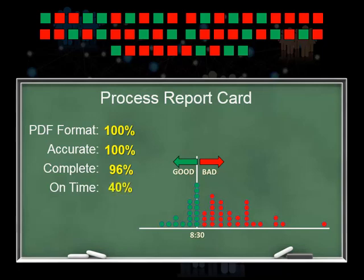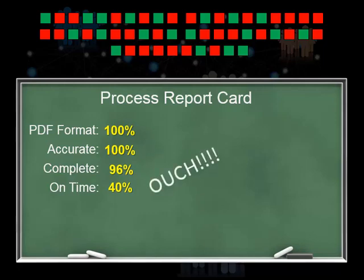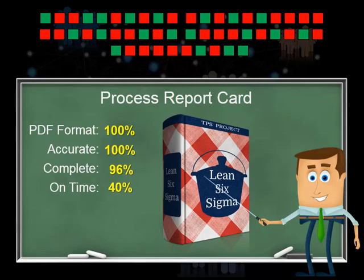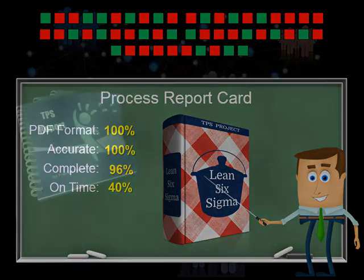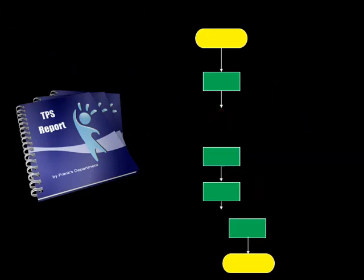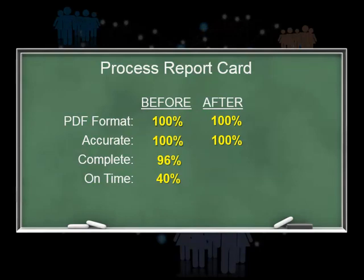This means managers were receiving their reports on time only 40% of the time — a pretty lousy performance record. So in terms of process capability, Frank had a reporting process that was highly capable of producing accurate data in the correct format. It was less capable of producing complete reports, and even less capable of providing those reports on time. By launching a Lean Six Sigma Greenbelt project, Frank was able to focus on improving timely delivery. His team mapped the process and used various LSS tools to identify issues causing late delivery and streamline the process. They improved on-time reporting from 40% to 98%, and at the same time improved their completeness performance to 100%.